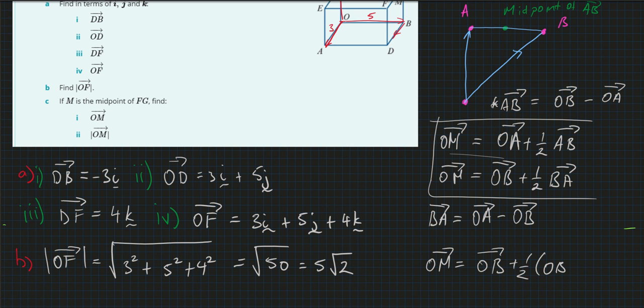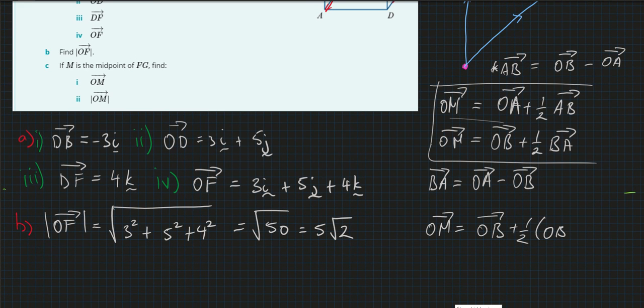So O to M is equal to O to A plus a half of O to B minus O to A, which equals, so we've got O to A take away half of it plus O to B, so we end up with a half of O to A plus O to B. And this means that if you're looking at the midpoint of any two points, you just add them together and divide it by two.